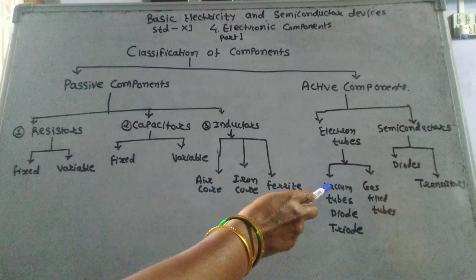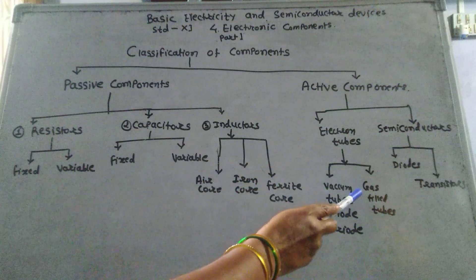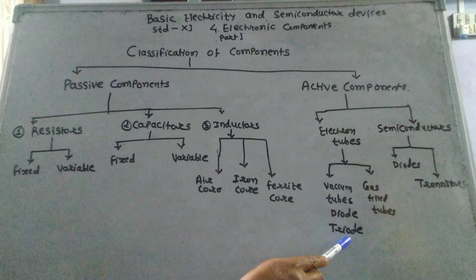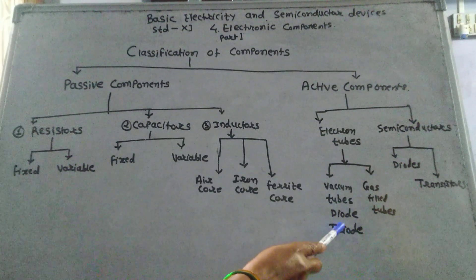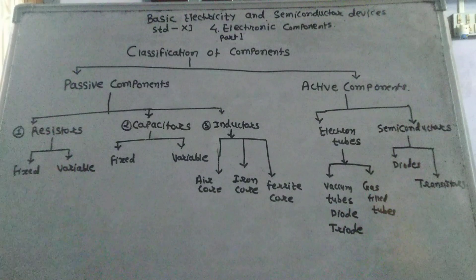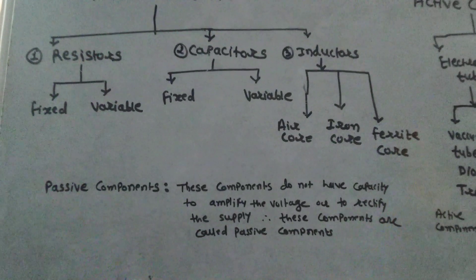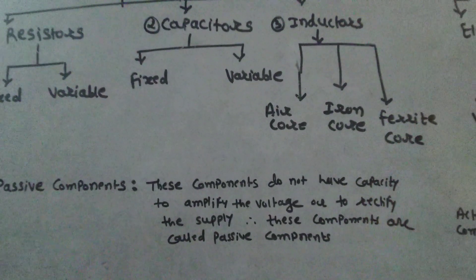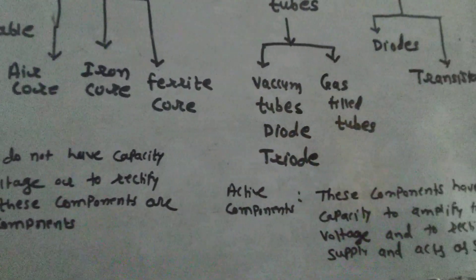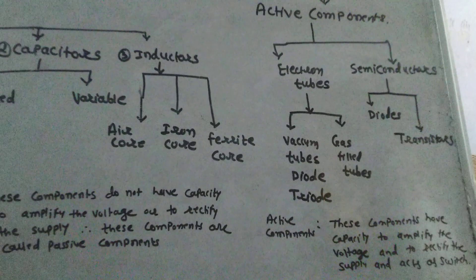Active components — electron tubes and semiconductors — are the two active components. Electron tubes have two types: vacuum tubes and gas-filled tubes. Vacuum tube types include the diode and triode. Semiconductors include diodes and transistors.